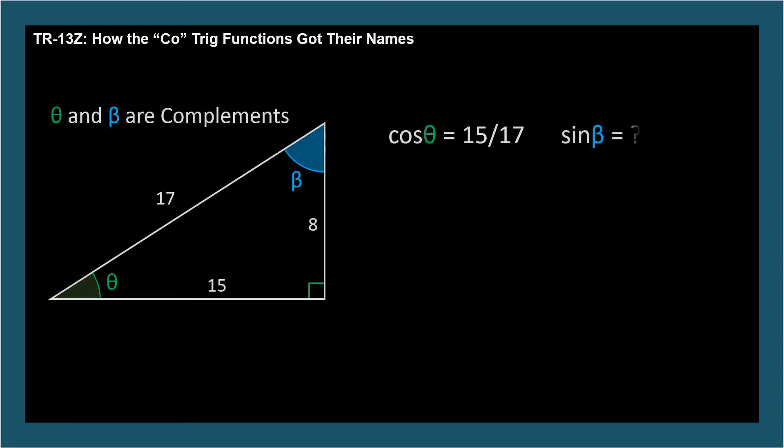What's the sine of beta? Sine is opposite over hypotenuse, and from beta's perspective, the opposite is 15. So it's the same ratio, 15 over 17.